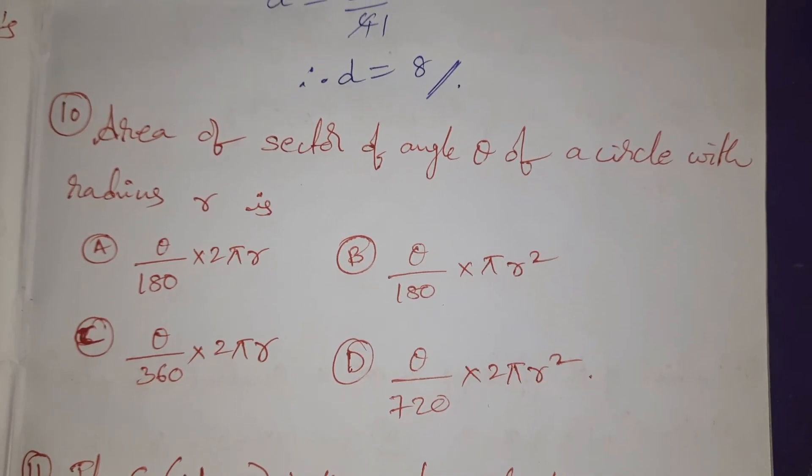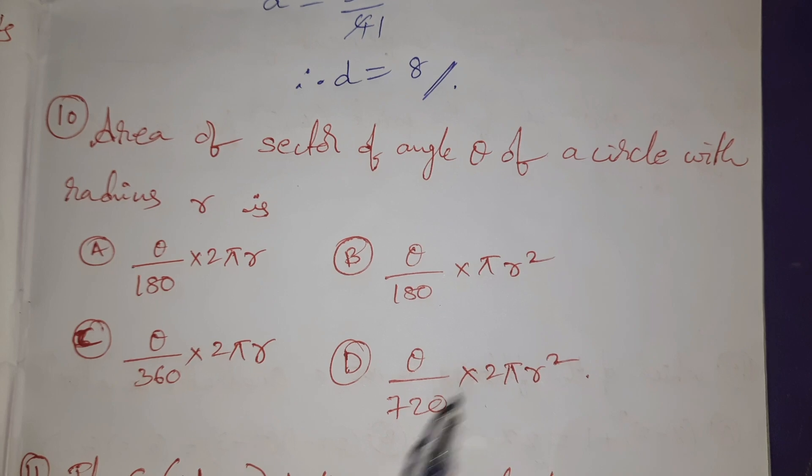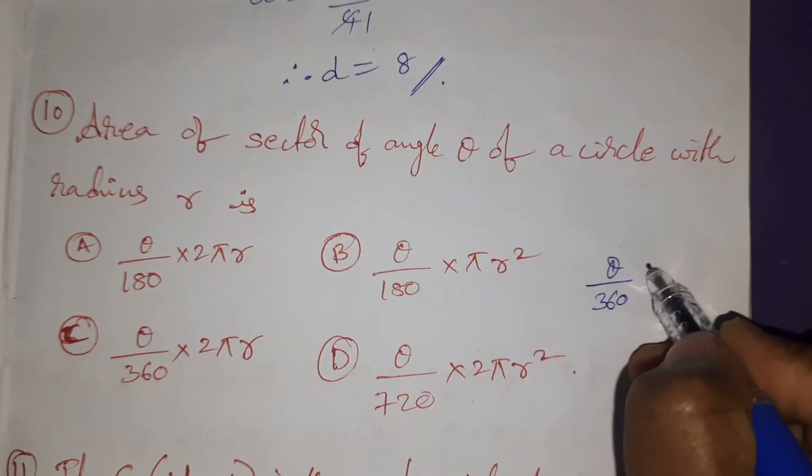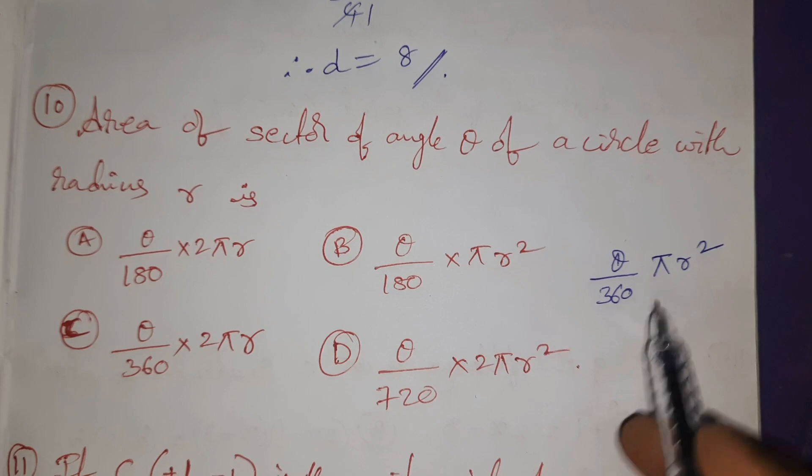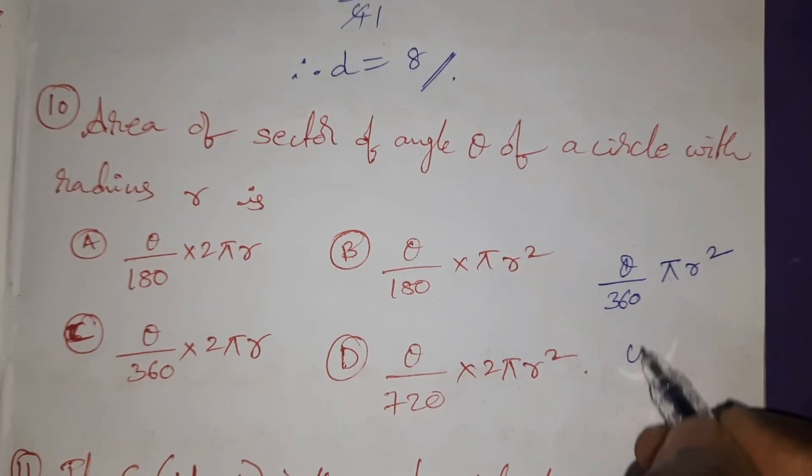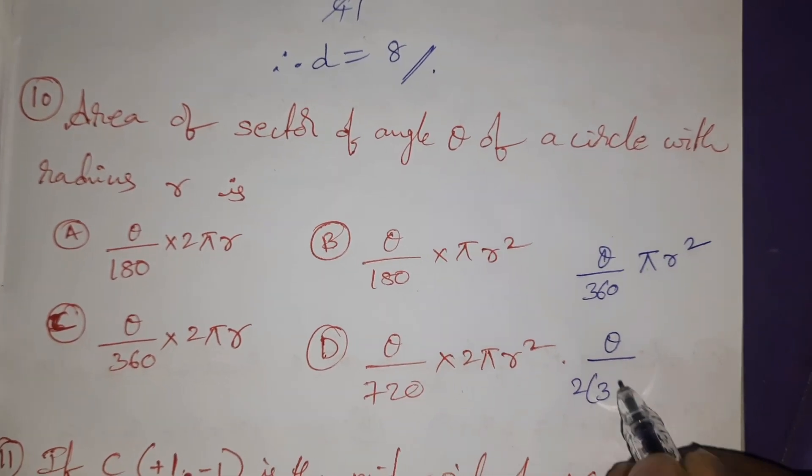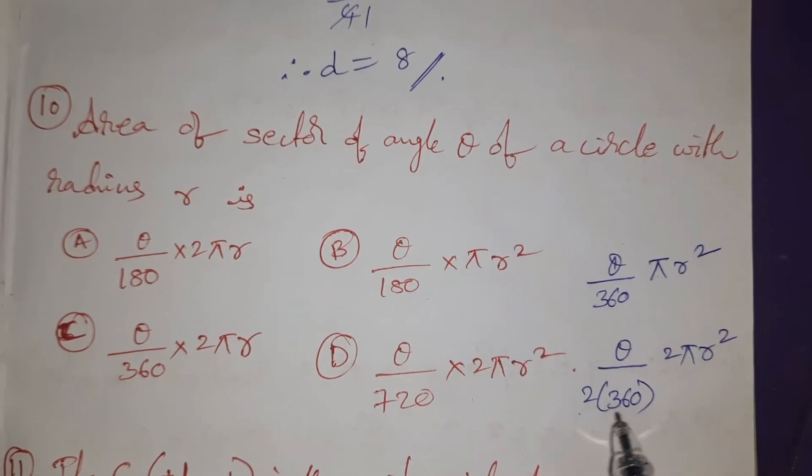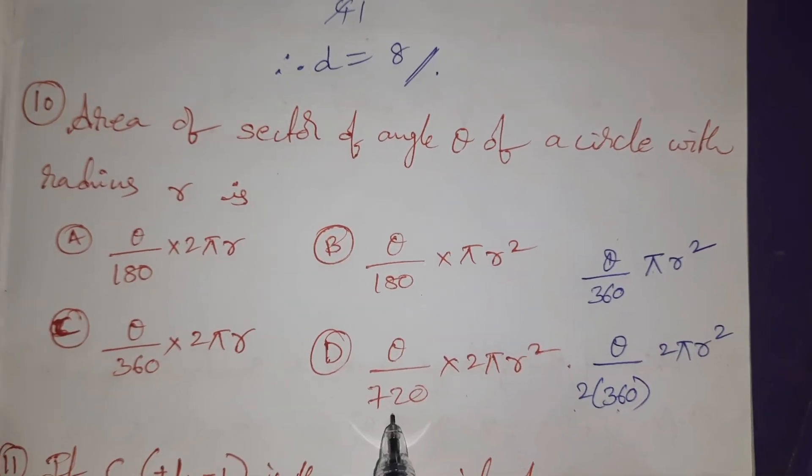In this also, 360 not there. Then I am multiplying and dividing with 2. Answer is θ/360 × πR². But here 360 not there now. So multiply and divide with 2. 2 × 360, 2πR². 360, 2's answer is 720.